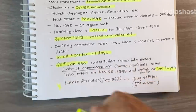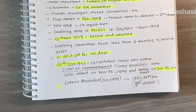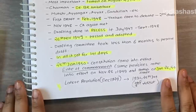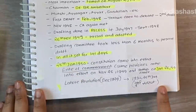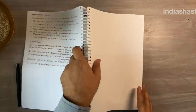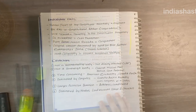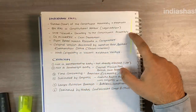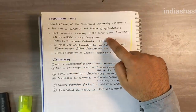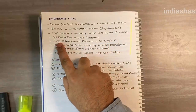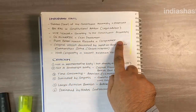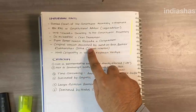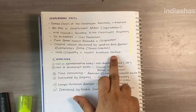26 January 1950 was chosen as the date for commencement because of the Lahore resolution of December 1929, on which day it was proclaimed that 26 January would be the day India attains Purna Swaraj. Some other facts: the symbol of the constituent assembly was the elephant. B.N. Rau was the constitutional advisor and legal advisor of the constituent assembly. H.V.R. Iyengar was secretary to the constituent assembly. S.N. Mukherjee was chief draftsman. The calligraphy of the constitution was done by Prem Bihari Narayan Raizada. The original constitution was decorated by Nandalal Bose and Beohar Ram Manohar Sinha, both from Shantiniketan. The Hindi calligraphy was done by Vasanth Krishnan Vaidya.